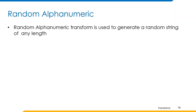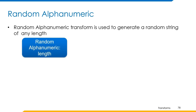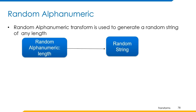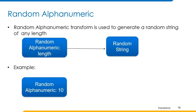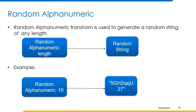Random alphanumeric transform is used to generate a random string of any length. It takes length as input and generates a random string consisting of both letters and numbers. If we do not specify the length attribute, then by default it takes 32 characters, and the maximum limit for length is 450 characters. For example, for a random alphanumeric string of length 10, we pass length 10 as input and a random value is returned as output.